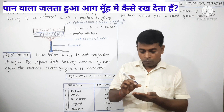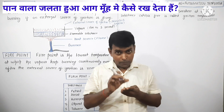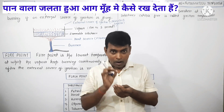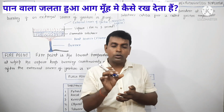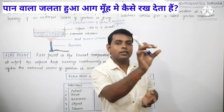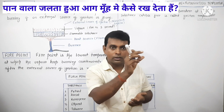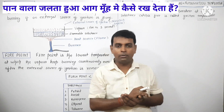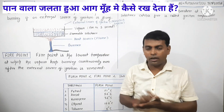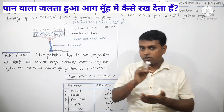Kabhi kabhi aapne suna ya dekha hoga ki koi paan waala apne paan mein aag lagaata hai aur us aag ke saath hi customer ke muh mein use daal deta hai, aur customer ka muh jalta bhi nahi. Aisa kyun hota hai? Aisa isliye ho jaata hai kyunki paan ke case mein yeh flash point ka phenomenon hai — approximately 5 seconds ke andar hi woh bujh jaati hai.